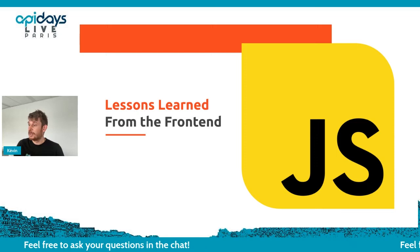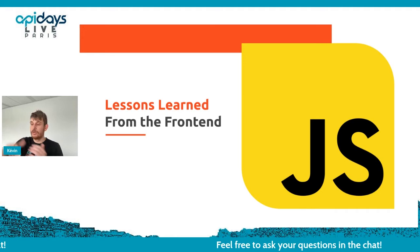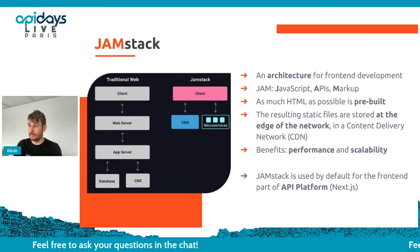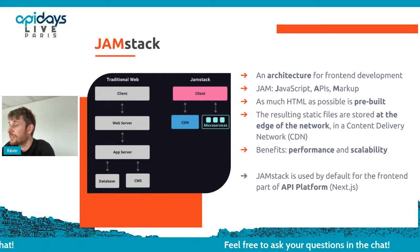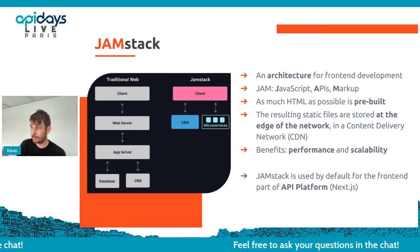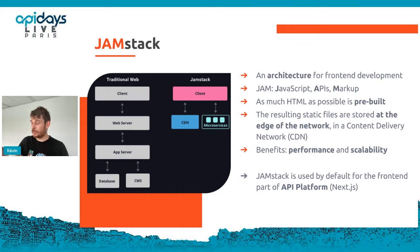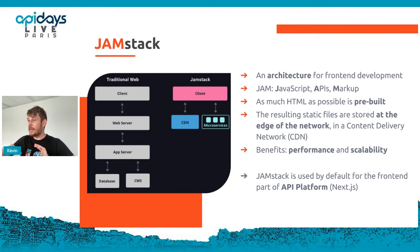The JavaScript ecosystem has leveraged these new features, standards, and infrastructure to make the web faster. There is a very popular architecture implemented by default by tools like Next.js called Jamstack. Jamstack is an architecture for front-end development — the main idea is to pre-generate the HTML pages served by your website.